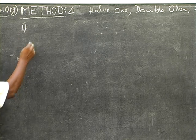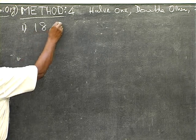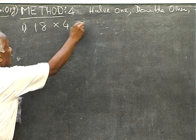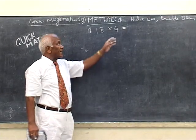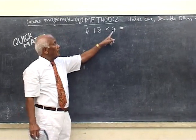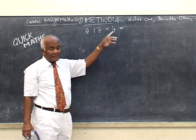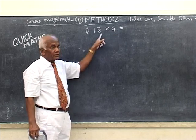We will call it method 4, half one number and double the other number. So they balance each other. So when the numbers are not convenient, this will be very handy and very convenient. See this example, 18 into 4. Now your mind will say the first method, multiply from left is correct, 40, 32, 72.